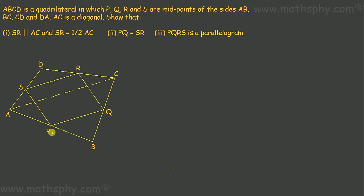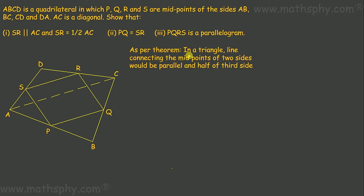This question requires us to recall a theorem which says: in a triangle, the line connecting the midpoints of two sides is parallel and half of the third side. In triangle DAC, S is the midpoint of AD and R is the midpoint of DC, so the line connecting midpoints of AD and CD would be parallel and half of the third side AC. So SR would be parallel to AC and SR would be half of AC.